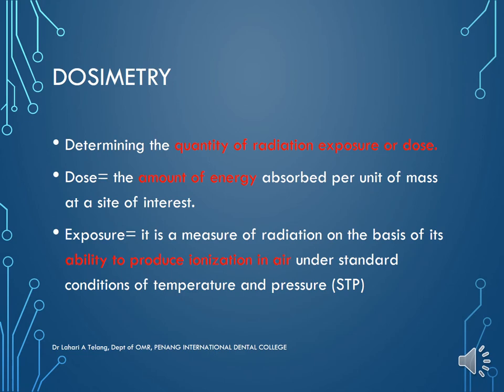Dosimetry is the term used in determining the quantity of radiation exposure or dose. The term dose describes the amount of energy absorbed per unit mass at a site of interest. Exposure is a measure of radiation based on its ability to produce ionization in air under standard conditions of temperature and pressure. Together, determining the quantity of radiation exposure is called dosimetry.